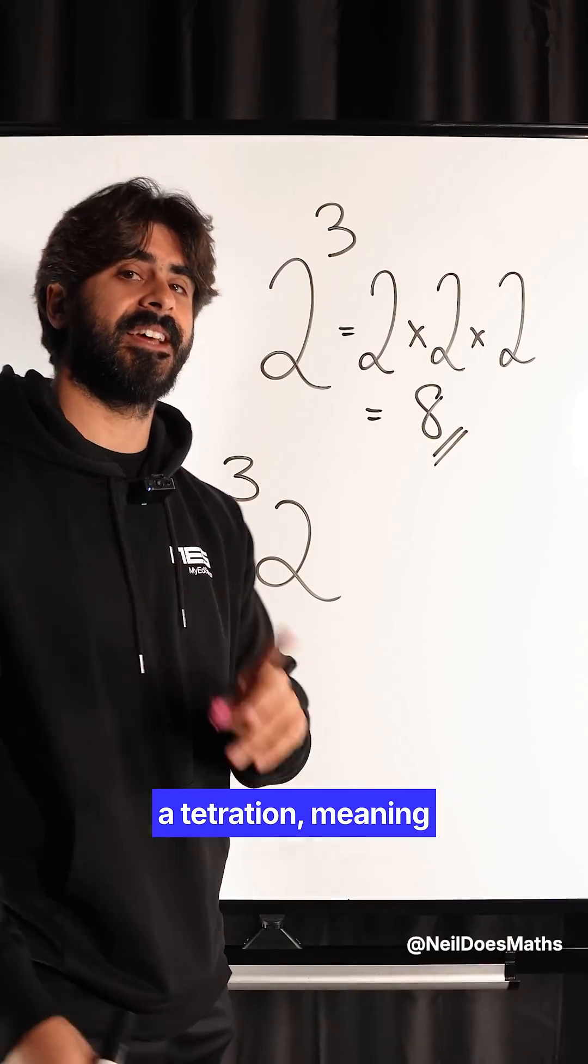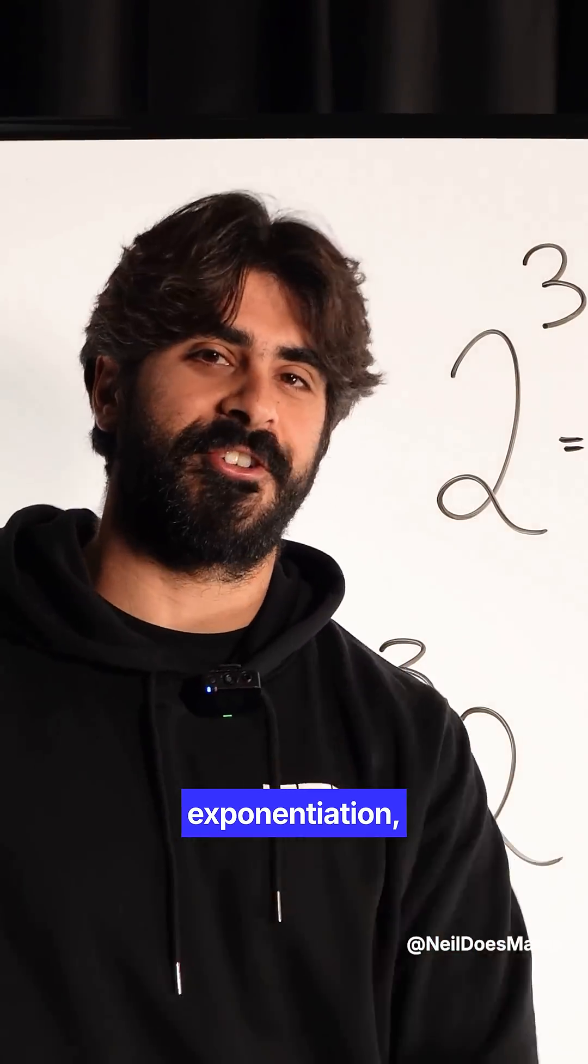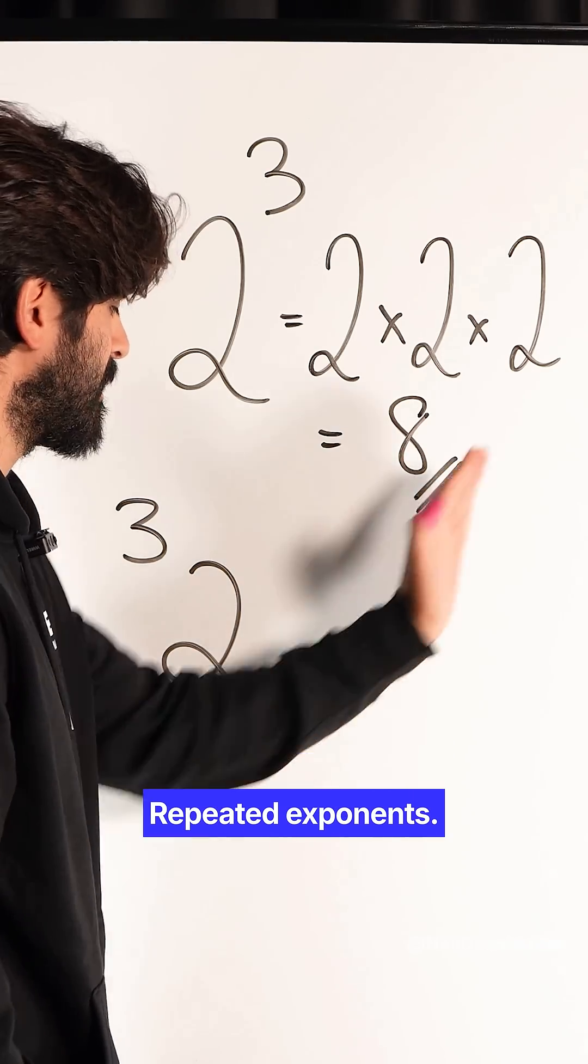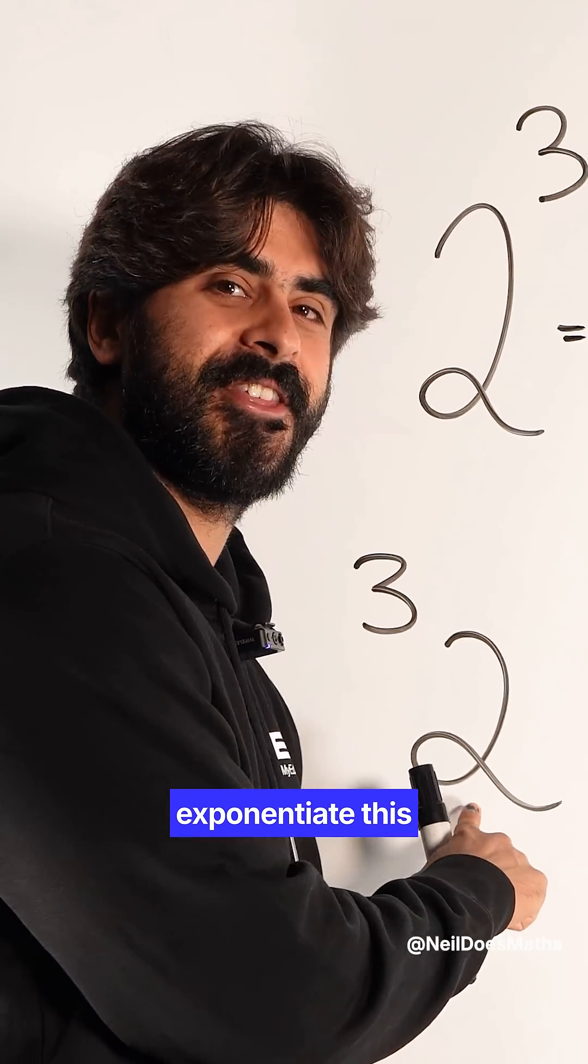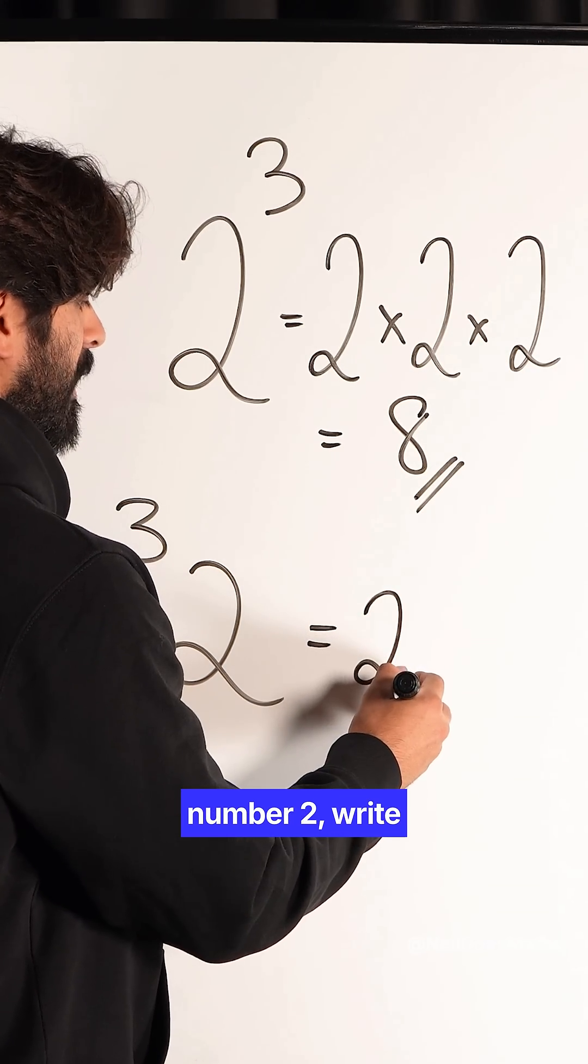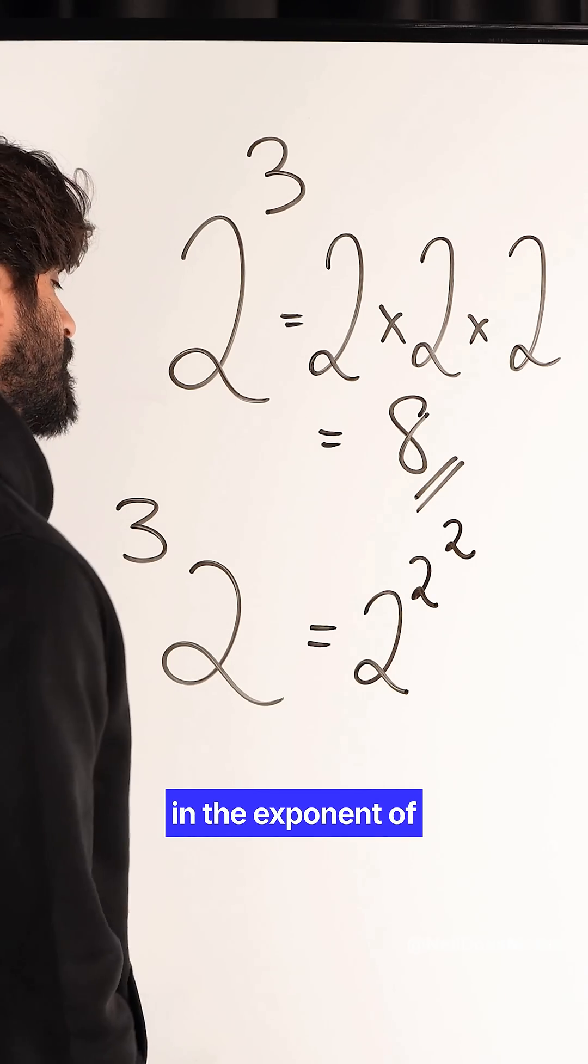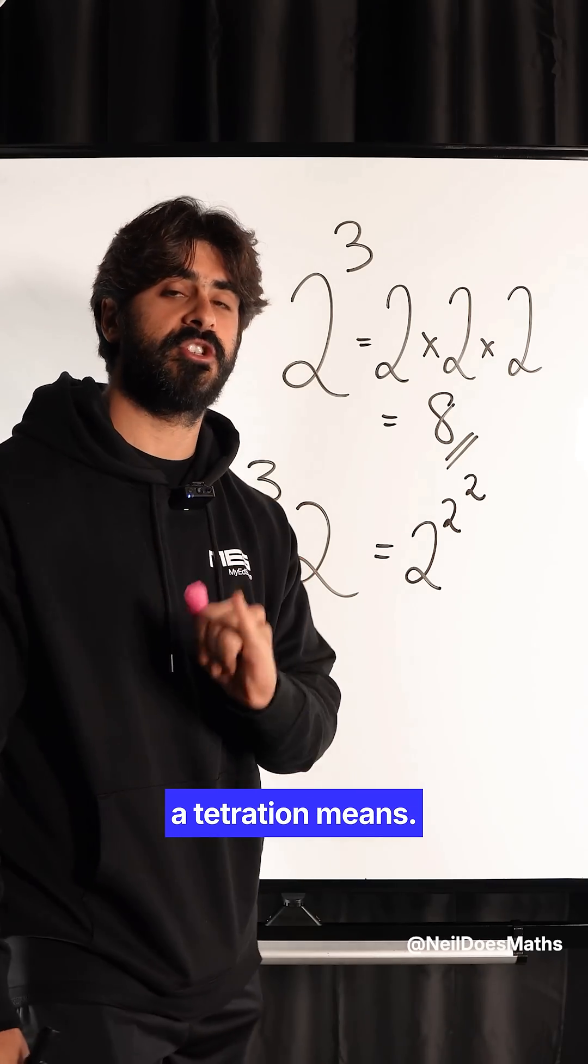This is known as a tetration, meaning repeated exponentiation, not multiplication—a power tower of repeated exponents. This is saying exponentiate this number three times, meaning we take the number two, write another two in the exponent, and another two in the exponent of that: one, two, three. That is what a tetration means.